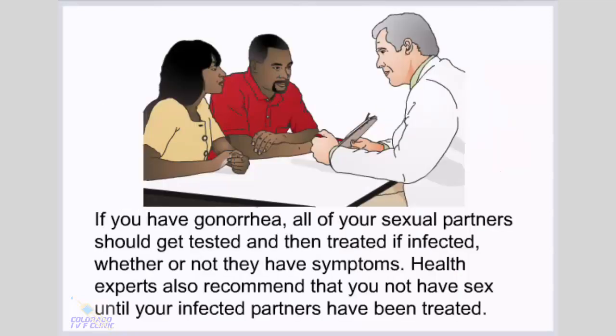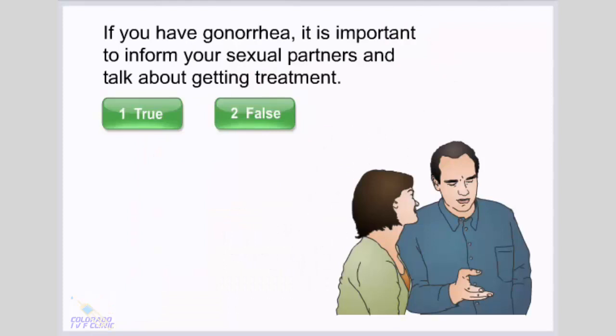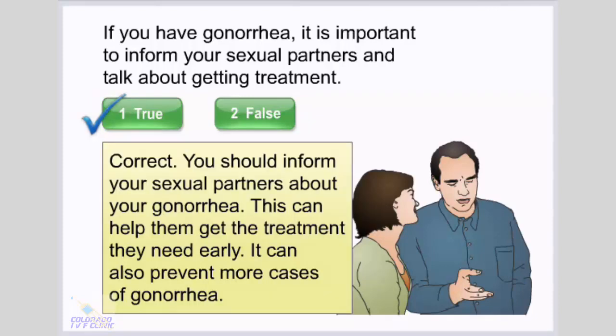If you have gonorrhea, all of your sexual partners should get tested and then treated if infected, whether or not they have symptoms. Health experts also recommend that you not have sex until your infected partners have been treated. It is important to inform your sexual partners and talk about getting treatment. Informing your sexual partners can help them get the treatment they need early and prevent more cases of gonorrhea.